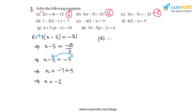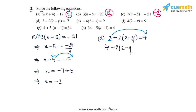In part d, the equation is 3 minus 2 times (2 minus y) is equal to 7. As a first step, transpose 3 to the right side to get minus 3, leaving minus 2 times (2 minus y) on the left and 7 minus 3, or 4, on the right. Next, divide both sides by minus 2, which leaves 2 minus y on the left and 4 divided by minus 2, which is minus 2, on the right.